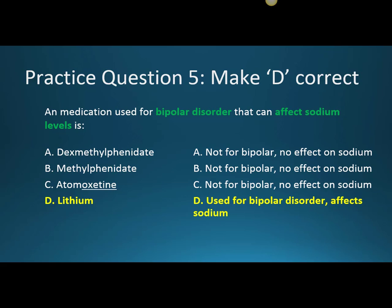Question four, make D correct. A medication used for bipolar disorder that can affect sodium levels is D, lithium. Lithium was the only medication in this video that can be used for bipolar disorder, and it does affect sodium. Lithium is a pretty good mood stabilizer — one of the oldest we have — and it's very effective in preventing suicide, but its use has fallen out of favor because of many negative side effects. It can cause tremor when lithium levels are a little high, renal dysfunction, and low thyroid levels. It's also not safe in pregnancy and has a small therapeutic index, meaning the target dose is close to both the toxic and ineffective dose, requiring tight control with frequent lab tests.